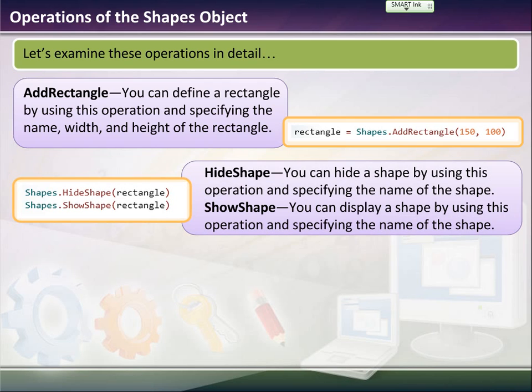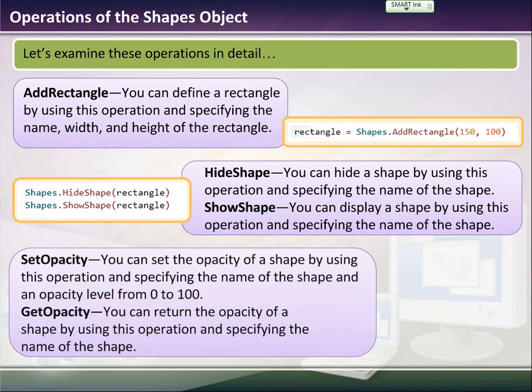You can hide the shape, and then you just hide shape and insert the shape name. So I can make rectangle 1 equals, make whatever rectangle I want. Rectangle 2, whatever. You don't even have to call it rectangle. You can just say RECT or whatever you want to do. Then to show it, you just use the show shape operation.